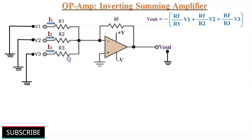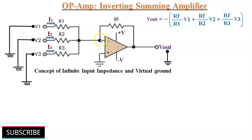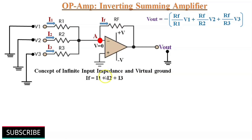Using the concept of infinite input impedance and virtual ground, this node A is acting as a virtual ground and voltage is 0 at this point, and there is no current to the input. This means the 3 input currents I1, I2 and I3 combine at the summing point A and form the total current IF which flows through the feedback resistor RF. So we can say that IF is equal to I1 plus I2 plus I3.